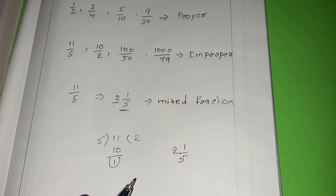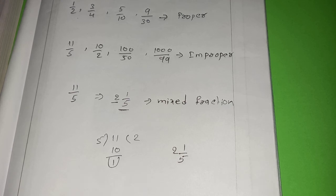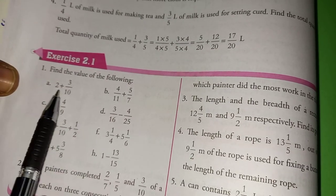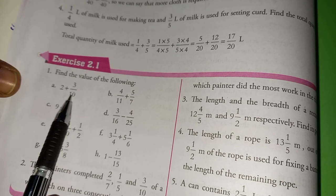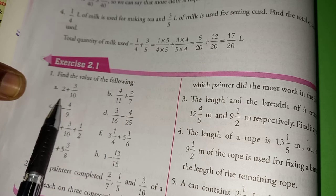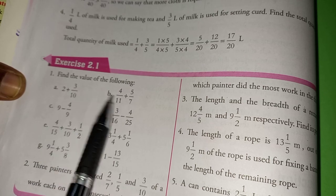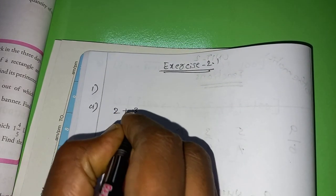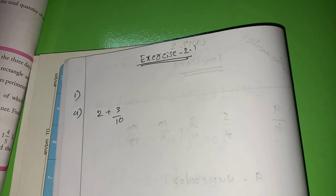Now let us move to the first exercise, exercise 2.1. The first question says: find the value of the following. They gave some numbers — one whole number and one fraction, and the remaining are fractions only. I will explain questions 2, 3, and 4; you have to do the remaining as homework. First one: 2 plus 3 by 10.